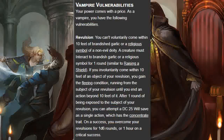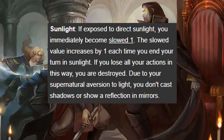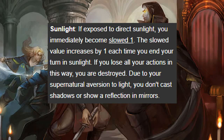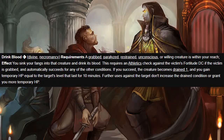A success means you overcome your revulsion for 1d6 rounds, or one hour on a critical success. You also gain vulnerability to sunlight — if you are exposed to direct sunlight you are immediately slowed 1. The slow value increases by one every time you end your turn in direct sunlight. If you lose all your actions this way then you are destroyed. And of course as a vampire you don't cast shadows or see yourself in mirrors.